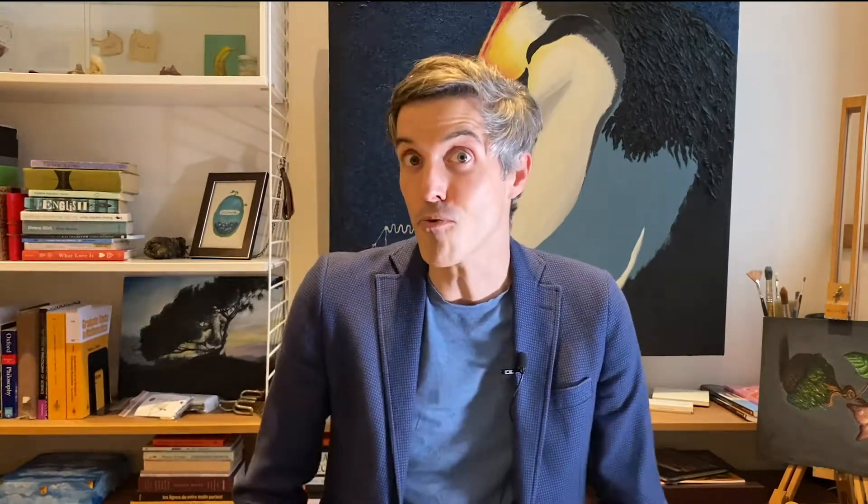The left and right ends of a ruler at rest in some reference frame correspond to vertical lines in the space-time diagram. The ruler is just the space between the two ends. My god, a thing is the space between its two ends. Now when one observer is set in motion, the principle of relativity says the laws of physics are the same in every inertial reference frame.